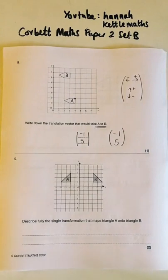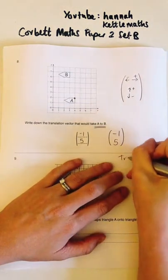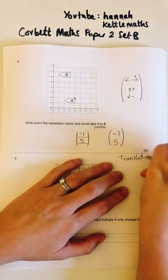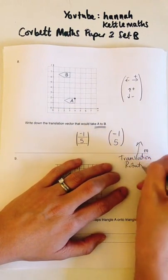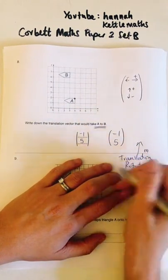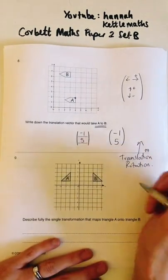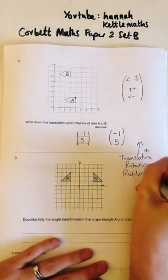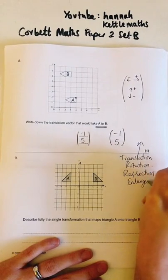Question nine: describe fully the single transformation. There are four transformations to remember — translation, rotation (when it turns), reflection, and enlargement.